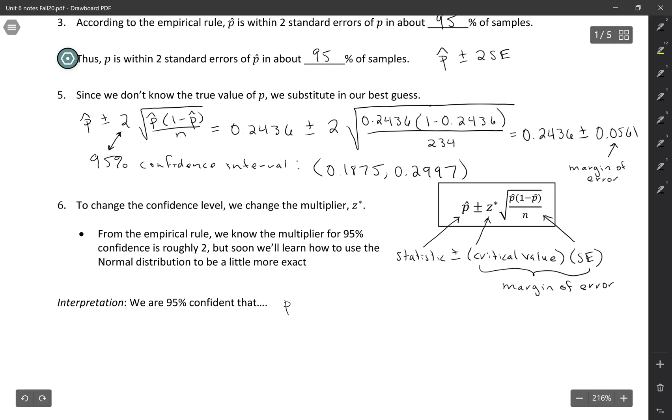So in this case, we would say we are 95% confident that the proportion who know about Cosmic Delivery, that's what they were asking on the survey, the proportion who know about Cosmic Delivery in the population, because this is a parameter, so it's the number that describes the population, that that proportion is between these two values, is between 0.1875 and 0.2997.